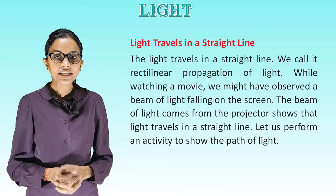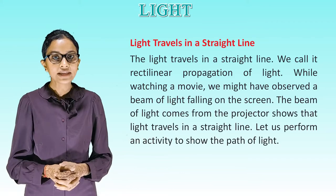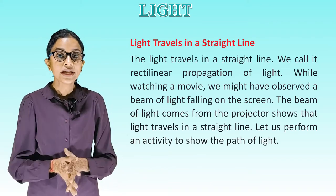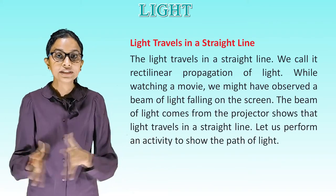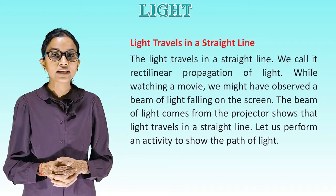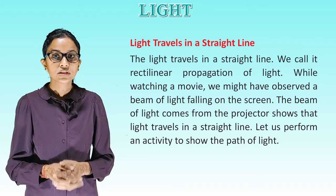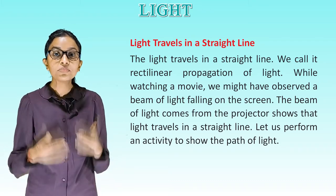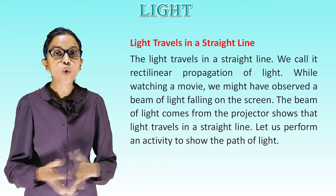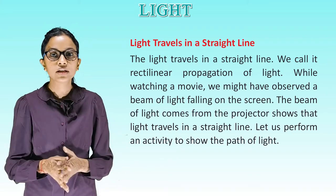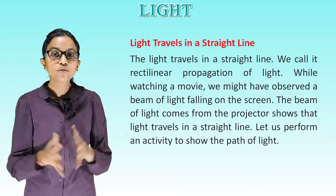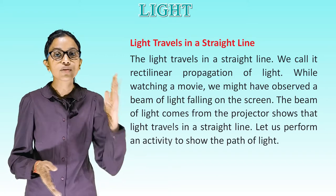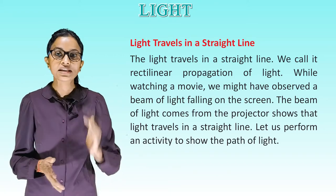Light travels in a straight line. The light travels in a straight line — we call it rectilinear propagation of light. While watching a movie we might have observed a beam of light falling on the screen. The beam of light coming from the projector shows that light travels in a straight line.